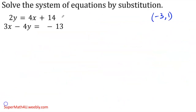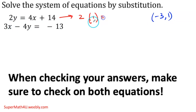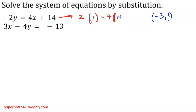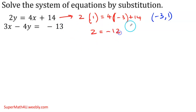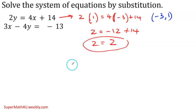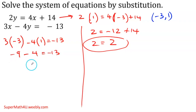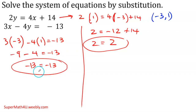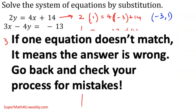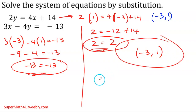Let's verify: plug the solution back into the first equation. 2y — my y is 1 — equals 4x, which is 4 times negative 3, plus 14. 2 times 1 is 2; 4 times negative 3 is negative 12 plus 14, which gives 2. So far so good. Second equation: 3 times negative 3 minus 4 times 1 — that's negative 9 minus 4, which is negative 13. That matches, so it works. My final answer is x equals negative 3, y equals 1.